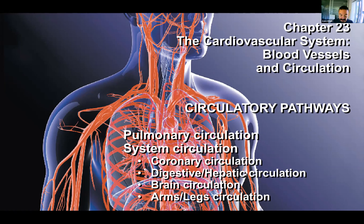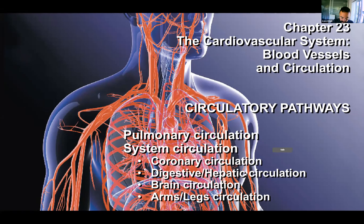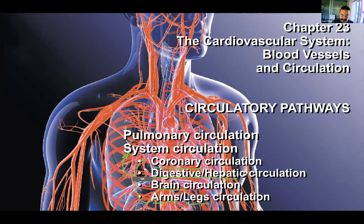This has several parts. We'll be going over pulmonary circulation first, then different parts of systemic circulation: coronary, digestive, hepatic, brain, arms, and legs. All of these are part of the systemic circulation. All systemic means is somewhere else in the body that isn't the lungs.